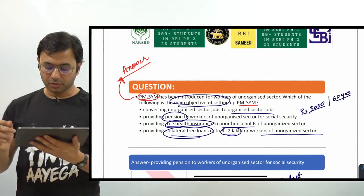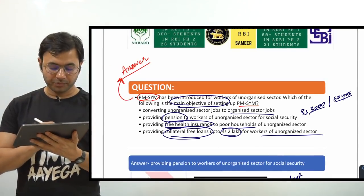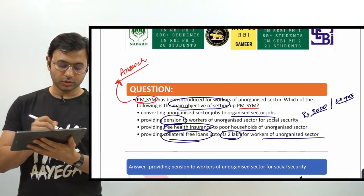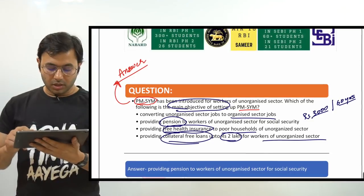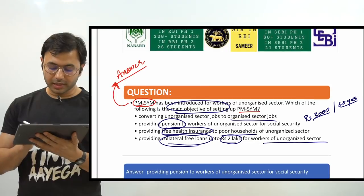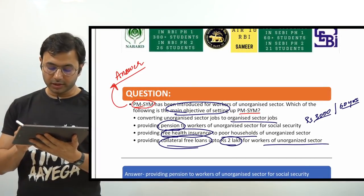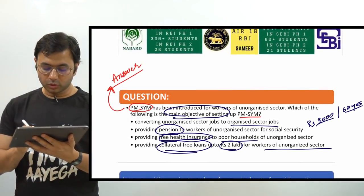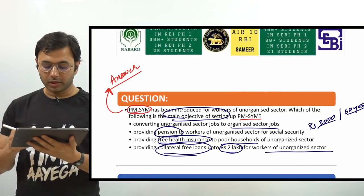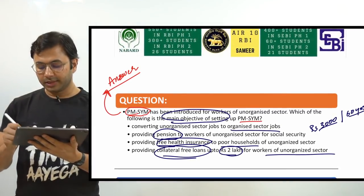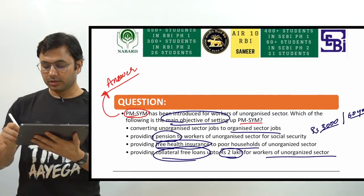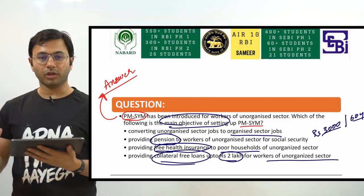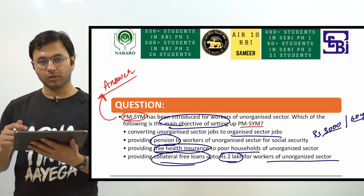PM SYM has been introduced for workers of the unorganized sector. What is the main objective of setting up PM SYM? Write the full form in the comment section below. The options are: 1. Converting unorganized sector jobs to organized sector jobs; 2. Providing pension to workers of unorganized sector for social security; 3. Providing free health insurance to poor households; 4. Providing collateral-free loans up to Rs 2 lakh. The answer is providing pension to workers of the unorganized sector for social security, where the maximum pension can be up to Rs 3,000 per month after the worker turns 60 years of age.